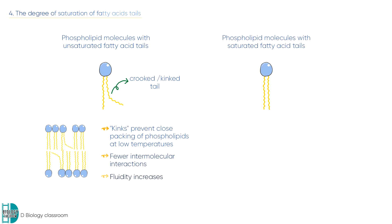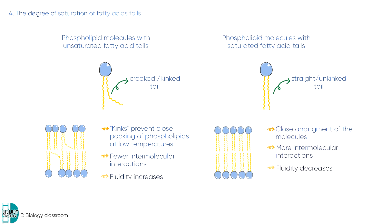Saturated tails have no double bonds, so they have straight and unkinked tails. This arrangement maximizes the interactions between the tails, causing the membrane to be less fluid.